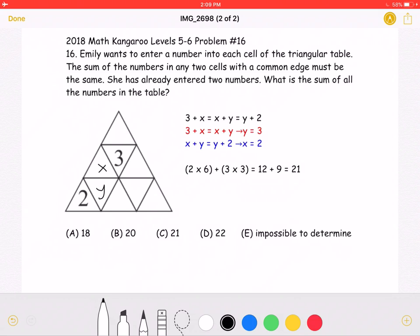The problem states that the sum of the numbers in any two cells with the common edge must be the same. Therefore,